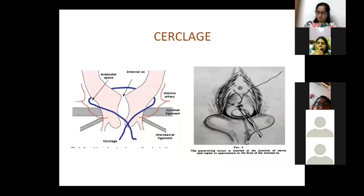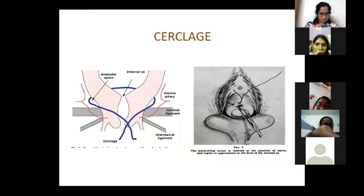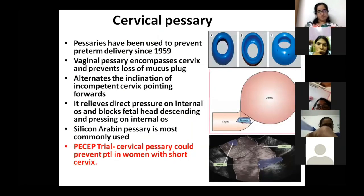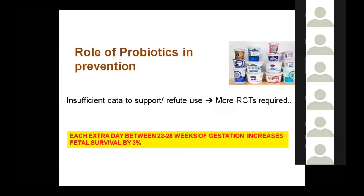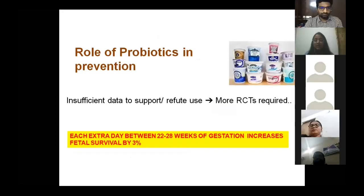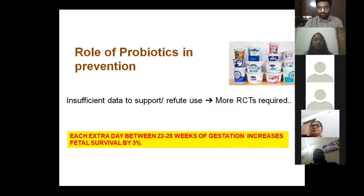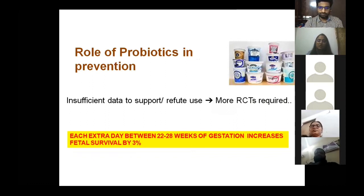In transabdominal cerclage, the approach is medial to the uterine arteries with the knot placed posteriorly. The PESEB trial found that cervical pessary has no role in preventing preterm labor in women with a short cervix. Regarding probiotics, nothing is proven yet — more RCTs are needed. Notably, each extra day in utero between 22 and 28 weeks increases fetal survival by three percent.